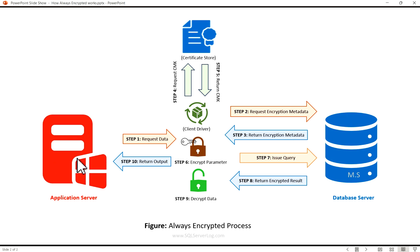In step three, return encryption metadata, SQL Server analyzes the query text to detect whether it involves parameters targeting columns encrypted using Always Encrypted. This information is transmitted to the client along with the encrypted values of any column encryption keys in use, as well as the respective locations of the column master key. This encryption metadata is stored locally on the client machine to avoid redundant metadata requests for the same query in subsequent calls.